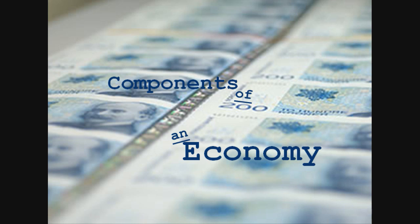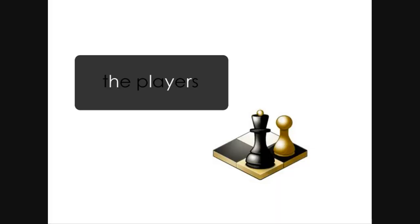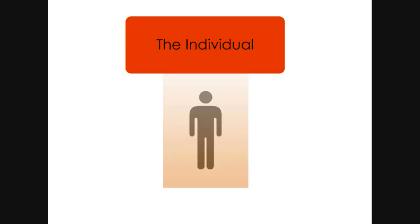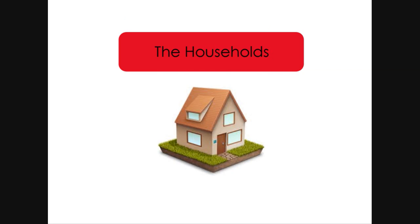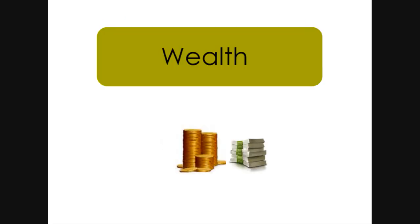We are going to get started with the concept called the components of an economy. The players in this economy are: one, the individual; two, the households; three, the industries; and four, wealth. Because ultimately, in an economy, money is one component that exchanges hands.